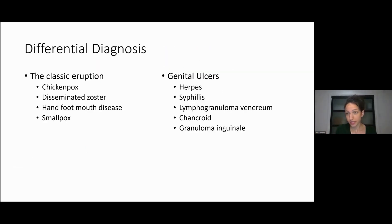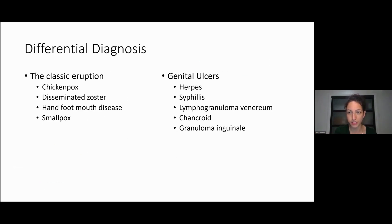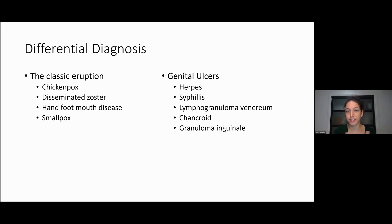The differential diagnosis falls into two groups: the classic eruption where you have lesions a little everywhere, and when it presents as just genital ulcers. For classic eruption, the differential includes chickenpox and disseminated zoster — the same virus, varicella zoster — hand, foot and mouth disease, another classic coxsackievirus in kids, and smallpox, which luckily isn't here anymore but still important to recognize as a bioterrorism risk. For genital ulcers: herpes, syphilis, and the rarer lymphogranuloma venereum, chancroid, and granuloma inguinale.